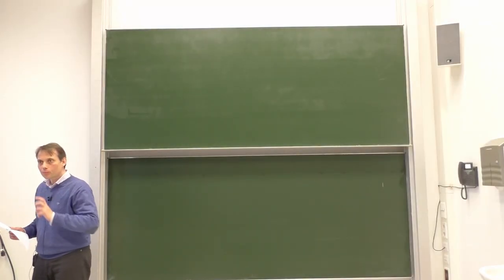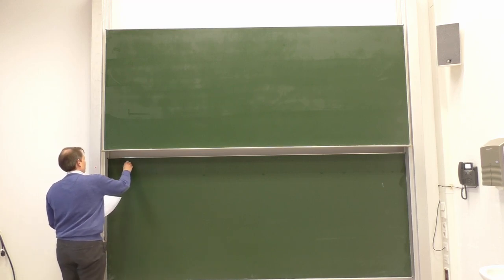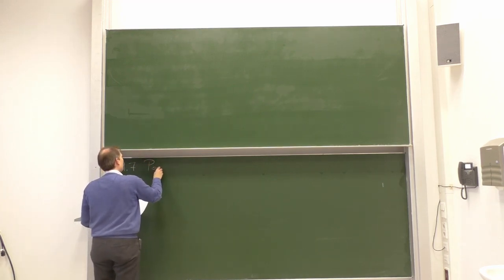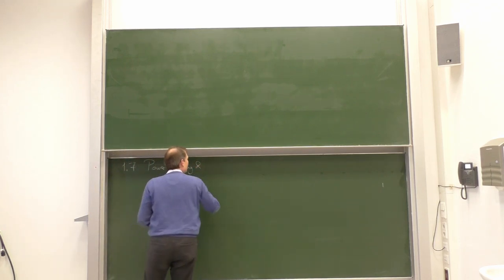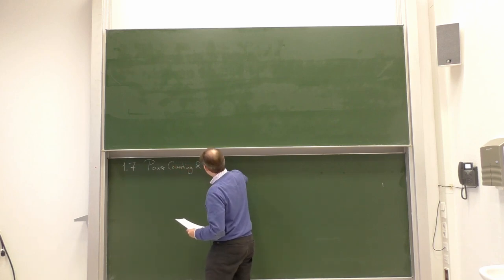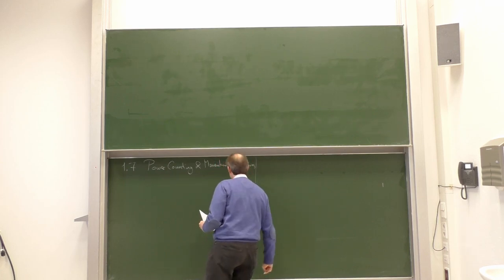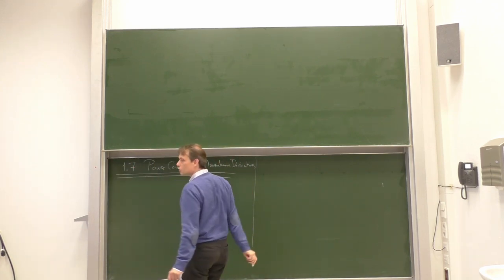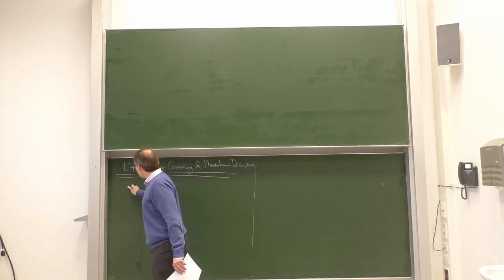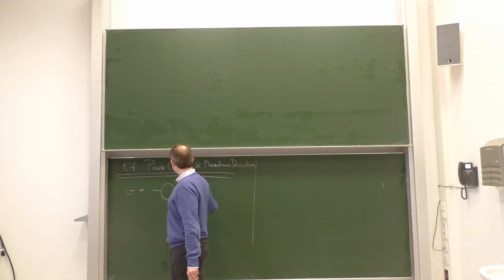The second topic for today is power counting and momentum derivatives. Let us draw any Feynman diagram with many loops.